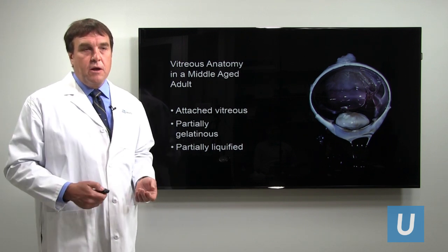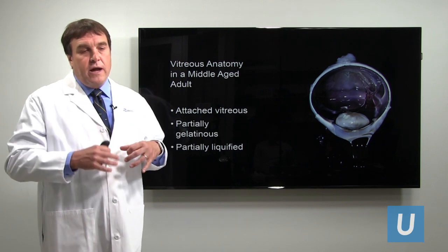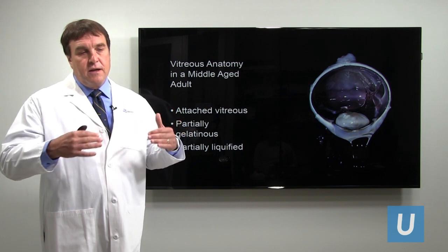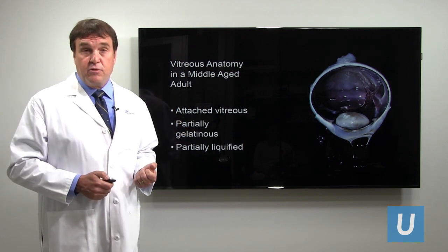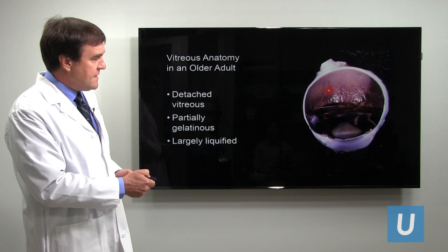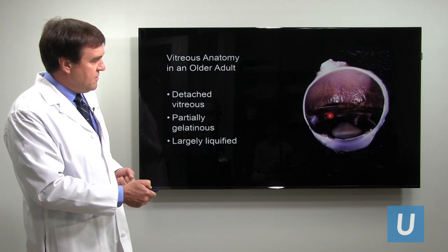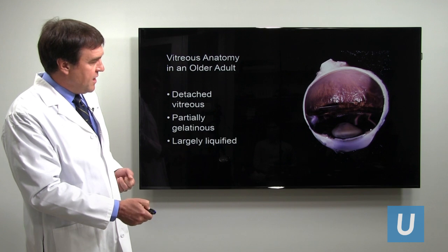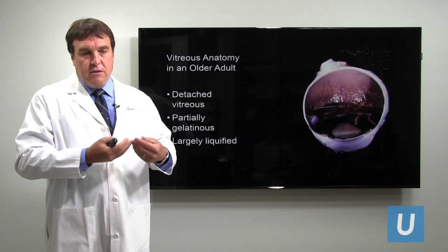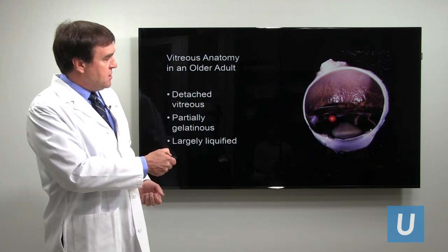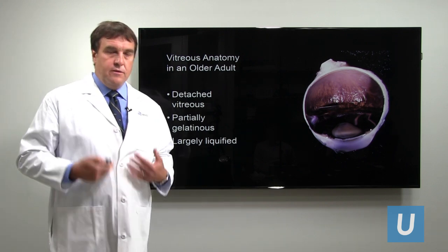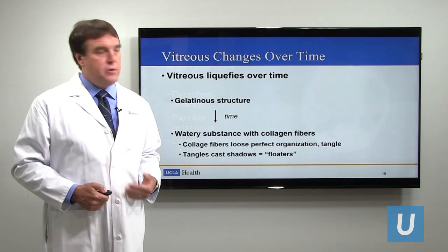Eventually the liquefaction continues and is most pronounced in the center of the vitreous gel, leaving a shell of gel on the surface of the retina that eventually collapses away, causing what is referred to as a vitreous detachment. Here you can see the retina is now naked — it doesn't have that glistening appearance. The residual vitreous is bunched up behind the lens, and fluid has just run out. These are the changes over time that contribute to the formation of floaters.